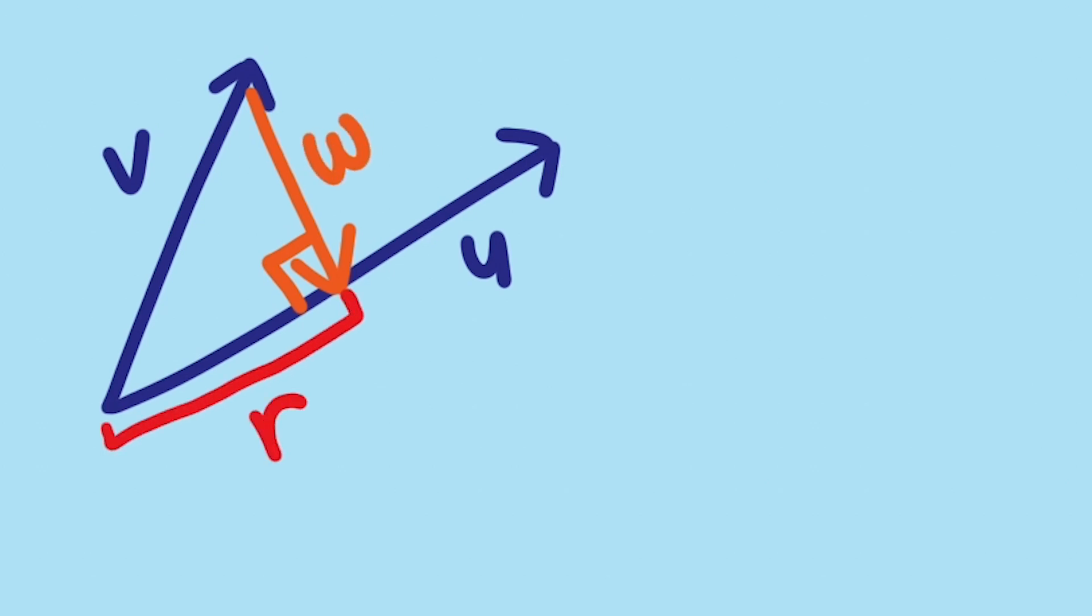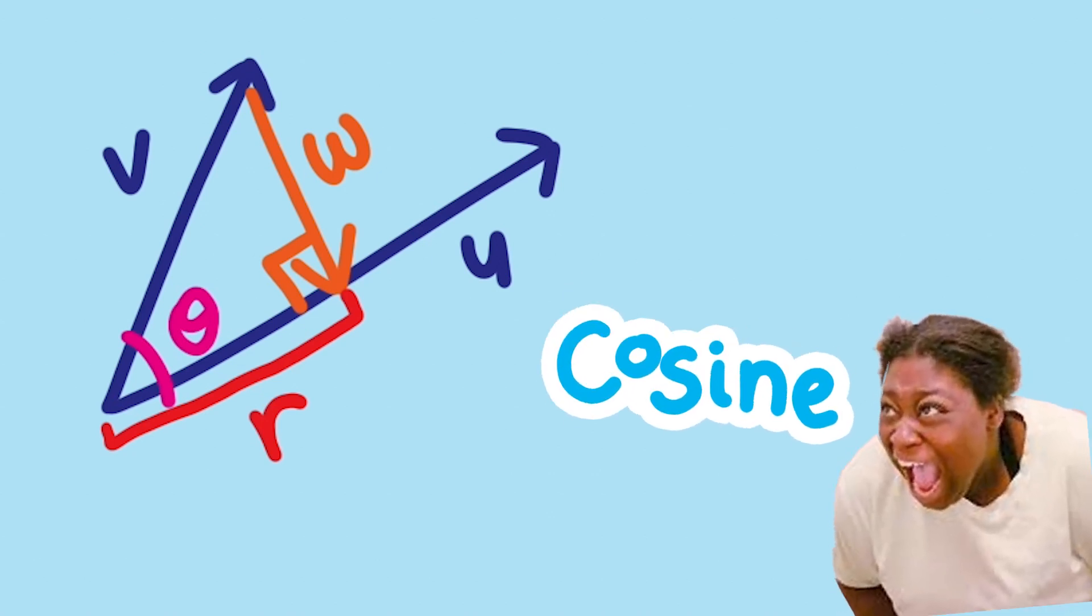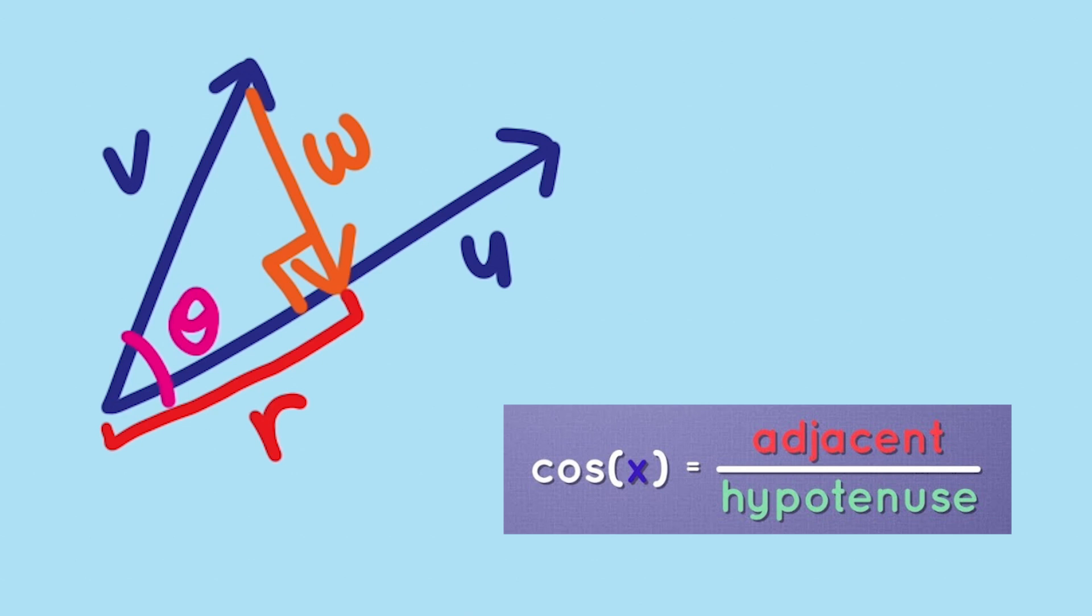And we know there's a lot of trigonometry out there that can help us find the measure of this angle. Maybe you're already screaming cosine at the screen. Yes, cosine of theta is adjacent over hypotenuse, which are the two sides our vectors lie on.